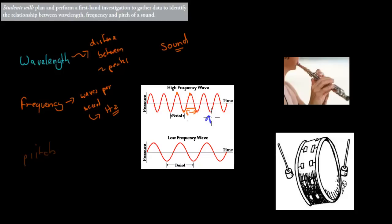Because here you would have maybe four, five, six Hertz, whereas on the bottom you'd have maybe three Hertz because there's a higher wavelength, which means lower frequency. Because the longer the waves are, the less travel paths per second.